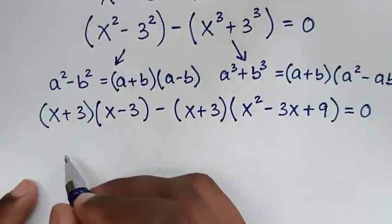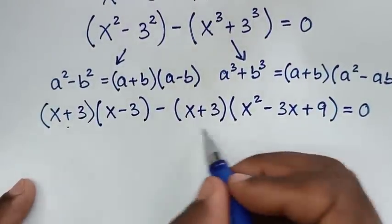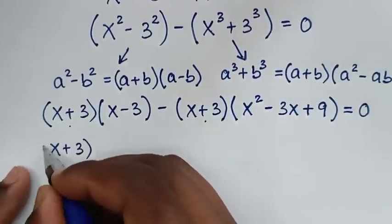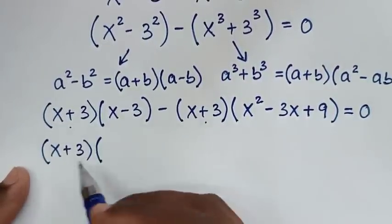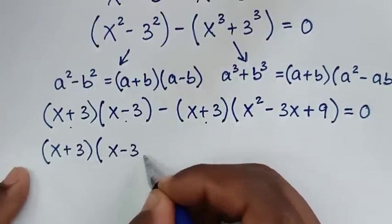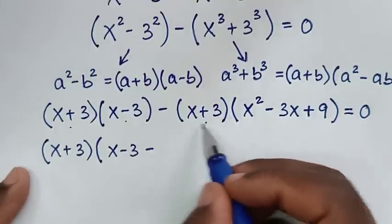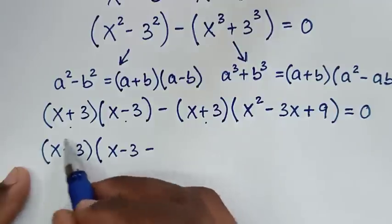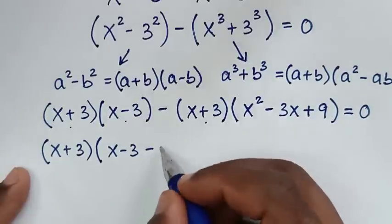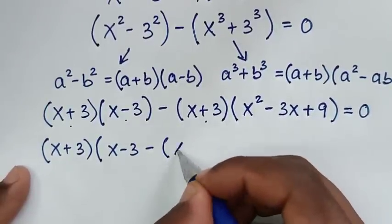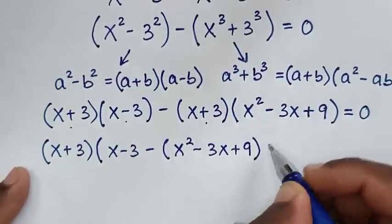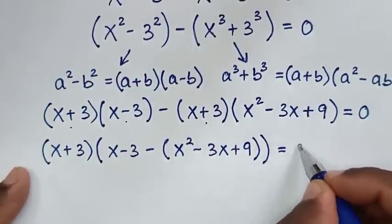In the next step, (x plus 3) is common in our equation, so we factor it out. It will be (x plus 3) times (x minus 3) minus (x squared minus 3x plus 9), bracket equal to 0.